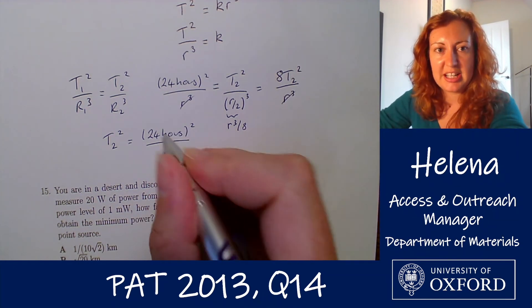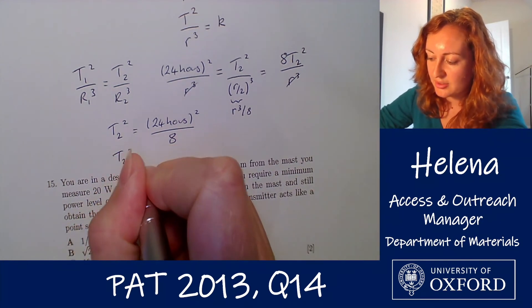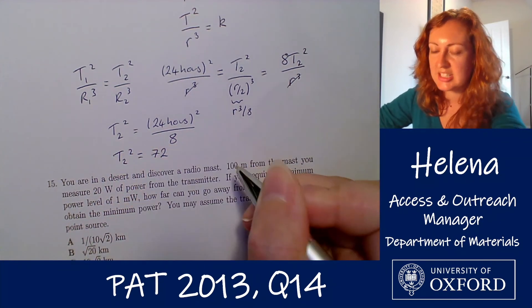So if we put this into our calculator if we do 24 squared divided by 8 we find that t2 squared is actually equal to 72.